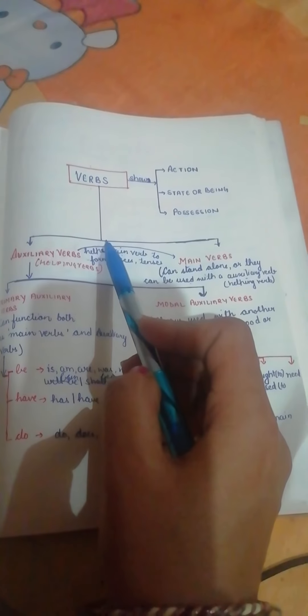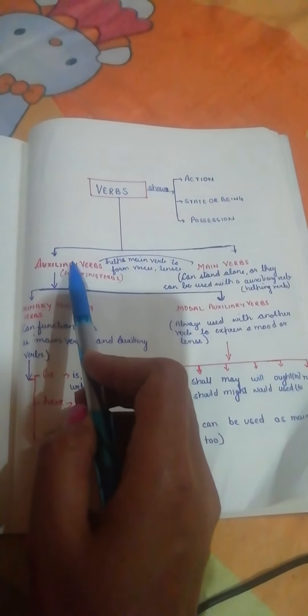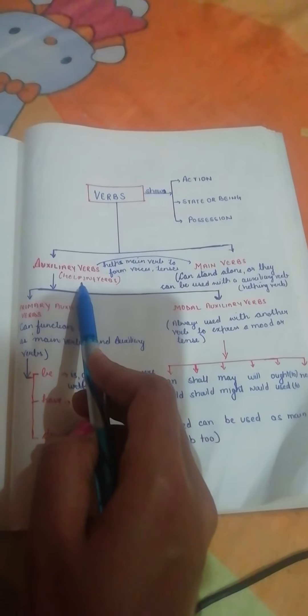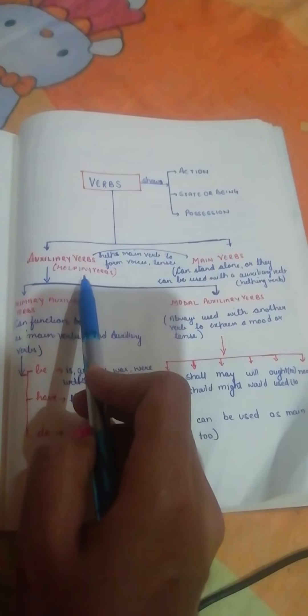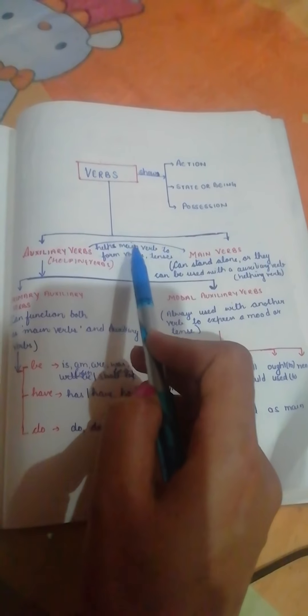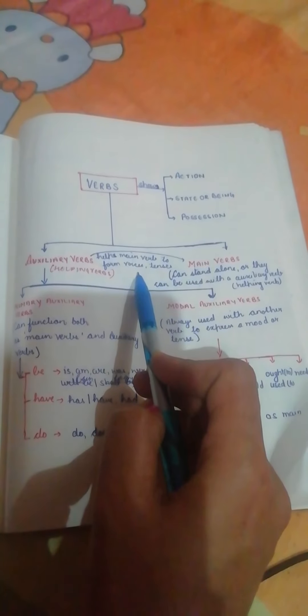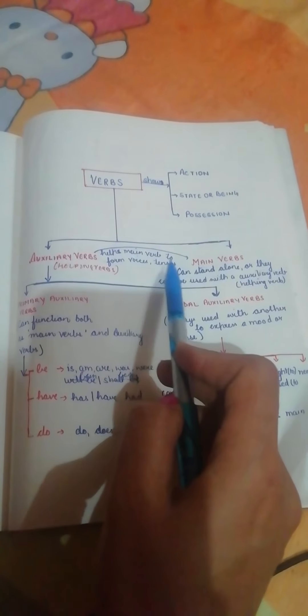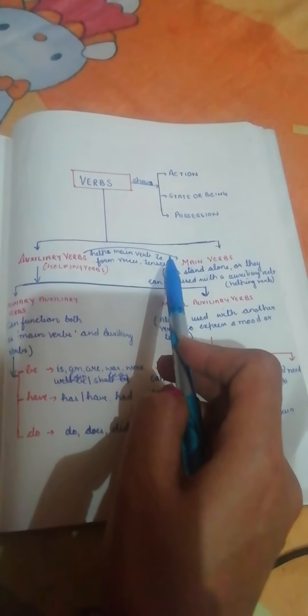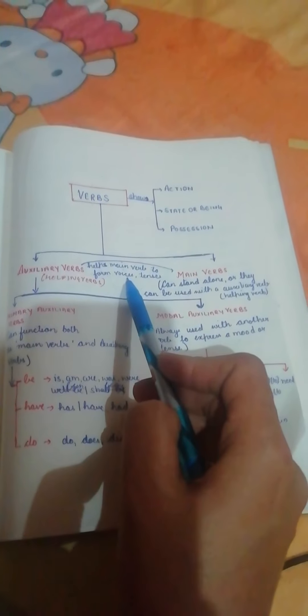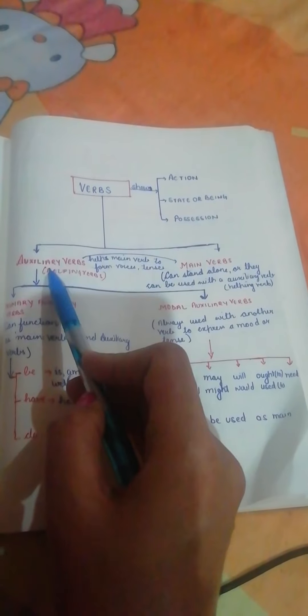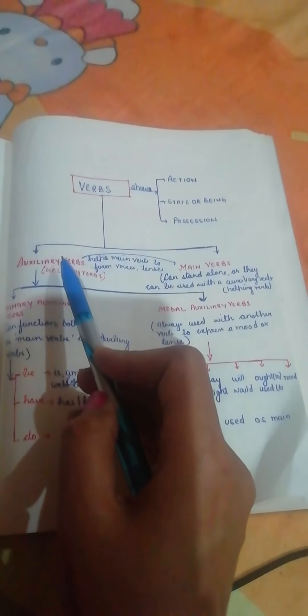Further, verbs can be auxiliary verbs or main verbs. Auxiliary verbs are also called helping verbs. They are called helping verbs because they help the main verb to form voices and tenses. Voices and tenses are an important part of grammar. To form tenses we need to use auxiliary verbs along with the main verb in most cases, and to form voices we definitely need auxiliary verbs with the main verb.